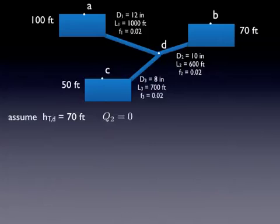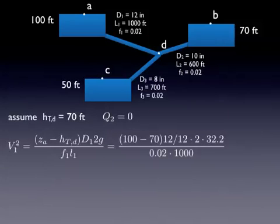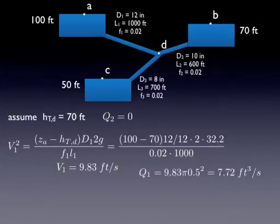So that simplifies, that gives us one less thing to calculate. So the flow in 1 can then be calculated using that equation we just derived. The change in head is simply 100 minus 70. That gives us a velocity of 9.8 and a certain flow rate.